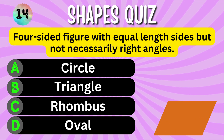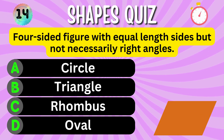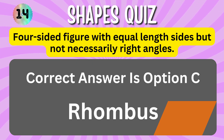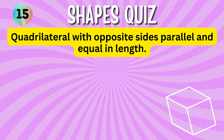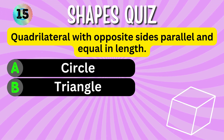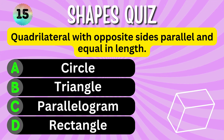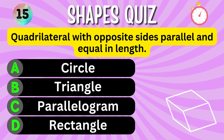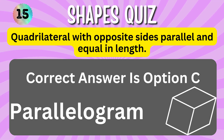The correct answer is Option C, Rhombus. Quadrilateral with opposite sides parallel and equal in length. Option A. Option B. Option C. Option D. You have 5 seconds to choose the correct answer. Your time starts now. The correct answer is Option C, Parallelogram.